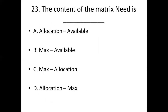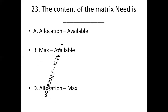Twenty-third bit. The content of the matrix Need is dash. Option A: Allocation - Available. Option B: Max - Available. Option C: Max - Allocation. Option D: Allocation - Max. Answer: Option C, Max - Allocation.